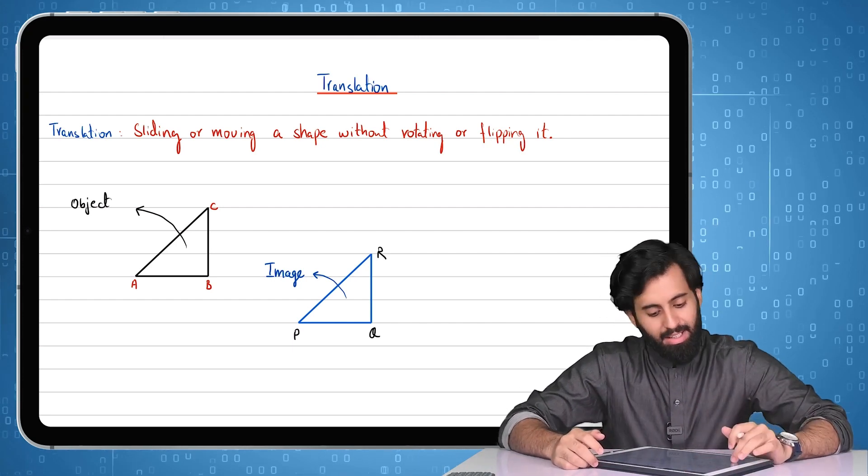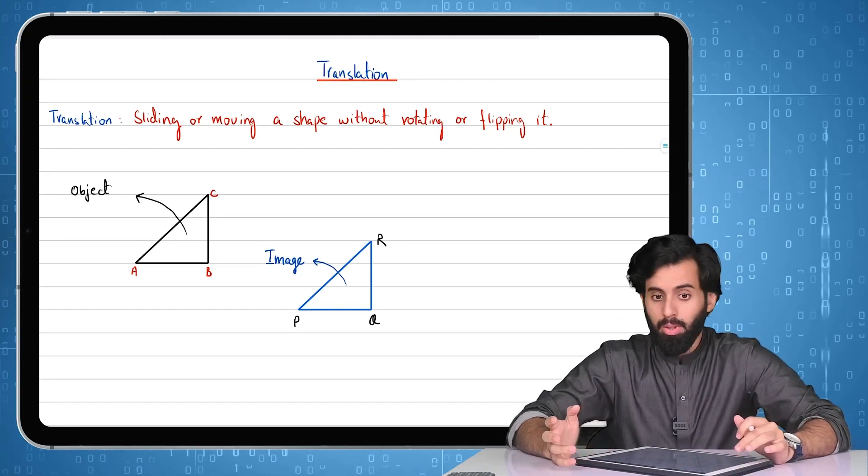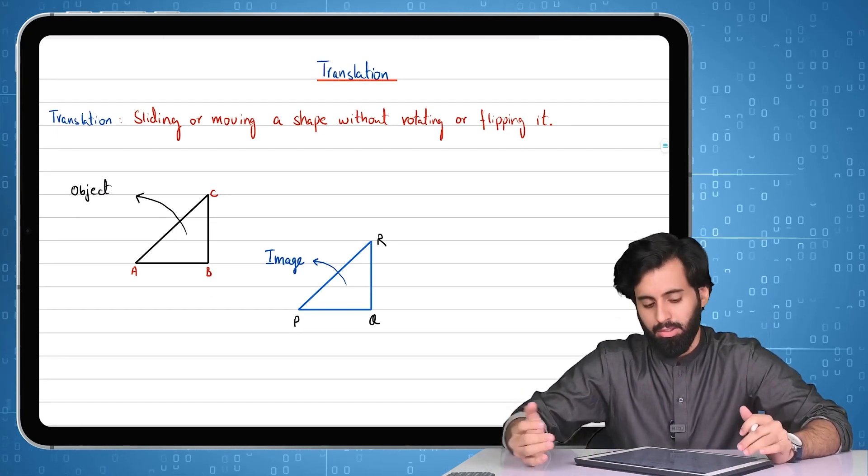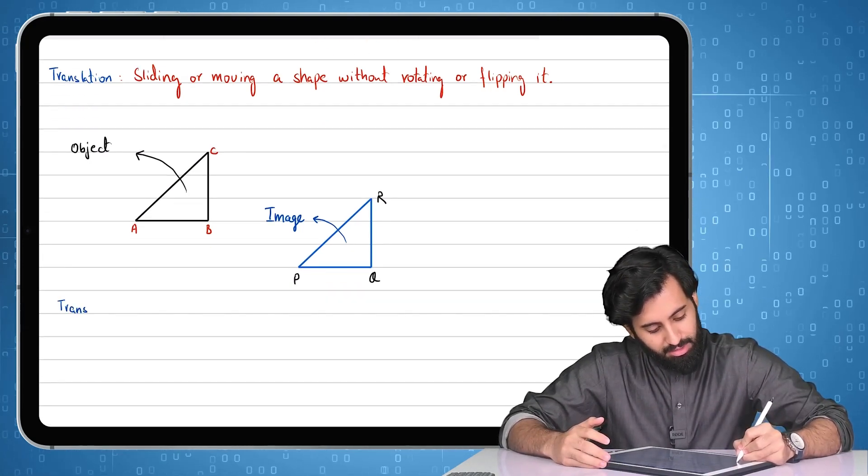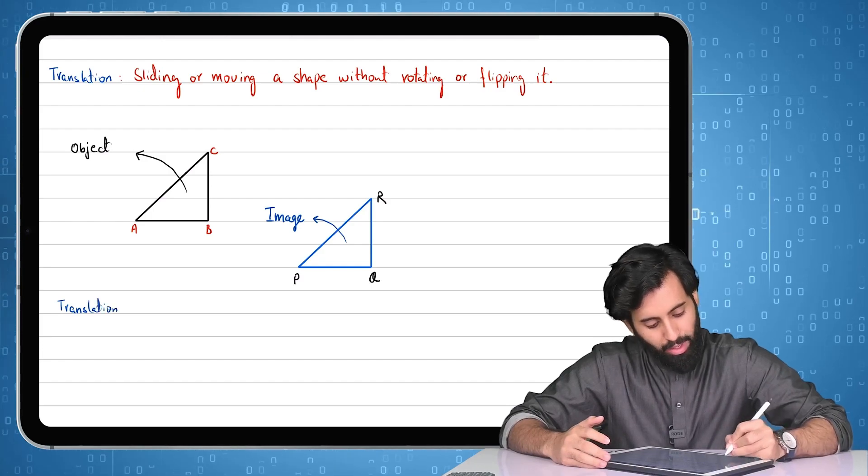What exactly or rather who exactly decides where the object is going to end up? That is defined by something called a translation vector.